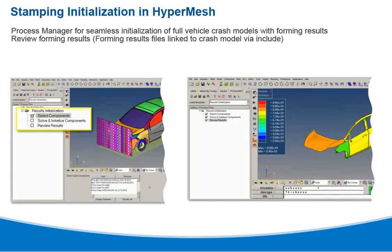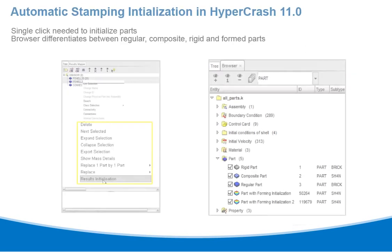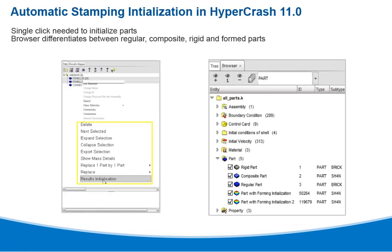Stamping initialization can be done in HyperMesh with a process manager for seamless initialization of full vehicle crash models with forming results. The results can also be reviewed linked to the crash model via Include. Automatic stamping initialization in Hypercrash offers a single click to initialize parts, and the browser differentiates between regular, composite, rigid, and formed parts.